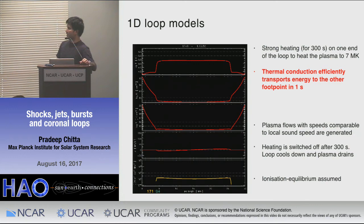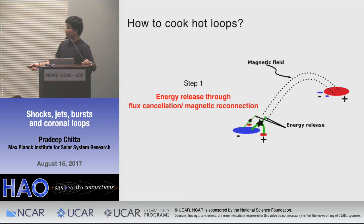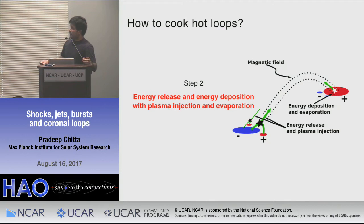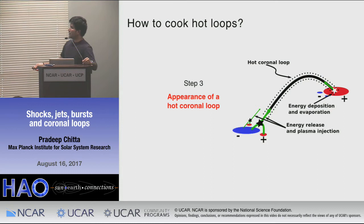These calculations assume ionization equilibrium. Based on these evidences, how do we form hot loops in active region cores? It is a three-step process. First, we need an energy release mechanism — in our observations it is clearly through flux cancellation and magnetic reconnection at lower heights. Once we release this energy at any location along the loop axis, the energy is quickly transported to the other end through thermal conduction or particle acceleration, depositing on that other end and heating the plasma locally, which evaporates plasma. As this process continues we have a complete loop that is hot and shows up at about 10 million Kelvin — a three-step process to heat plasma to very high temperatures.